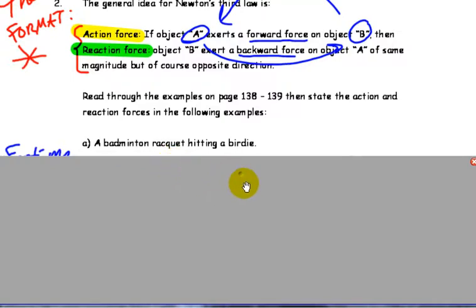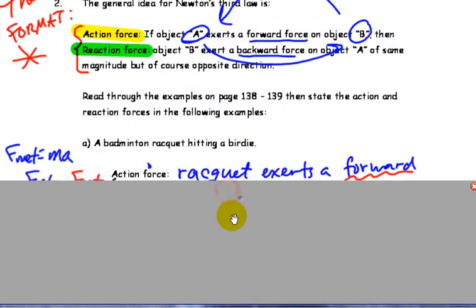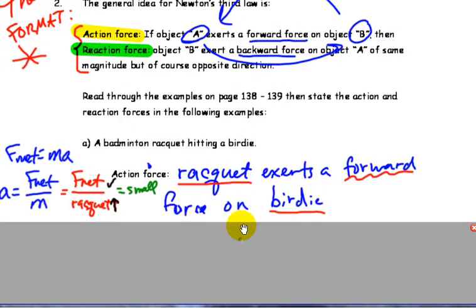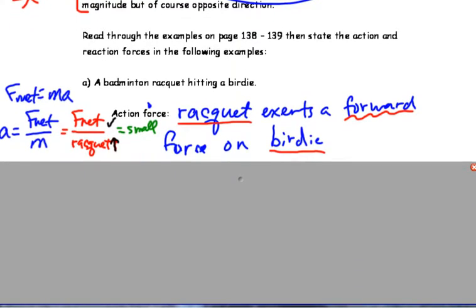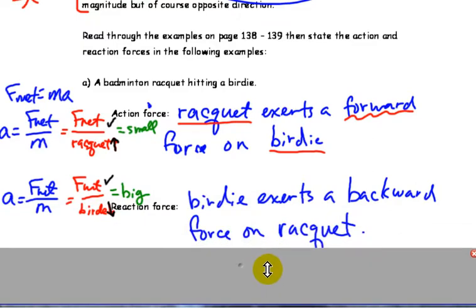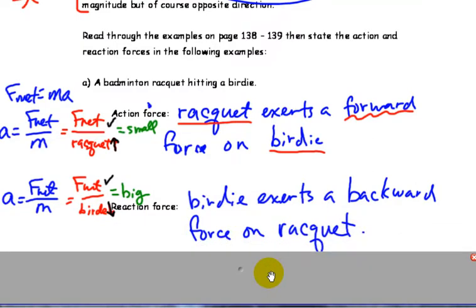So a badminton racket hitting a birdie. The two objects are the racket and the birdie. So the action: racket exerts a forward force on the birdie. Then if we interchange those two objects and make the force the opposite way, birdie exerts backward force on racket. Now you may be asking yourself, well, why doesn't the racket go flying backwards?